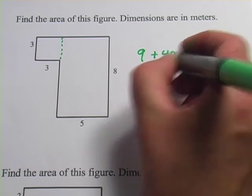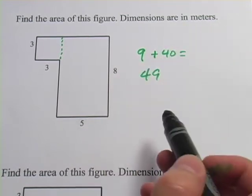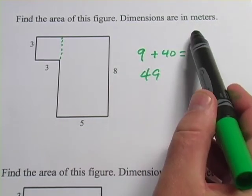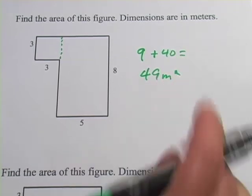We add those two together and get 49. Let's get our units right. It says dimensions are in meters, so since this is area, it would be square meters.